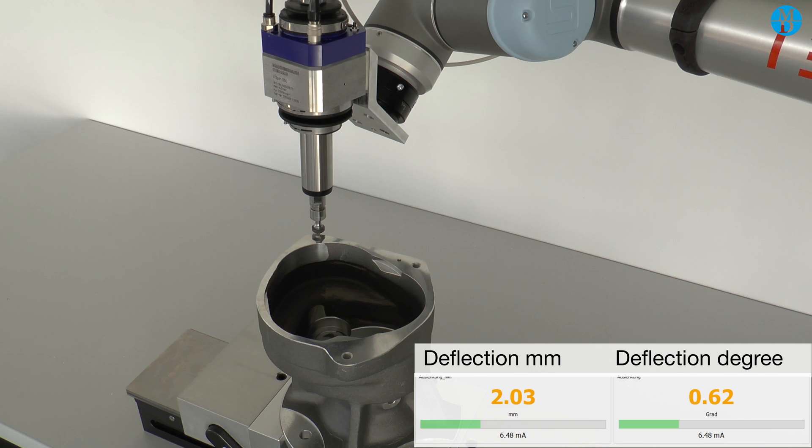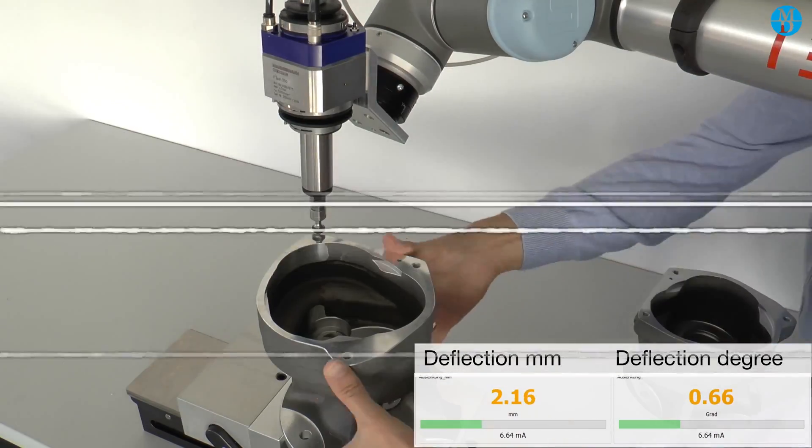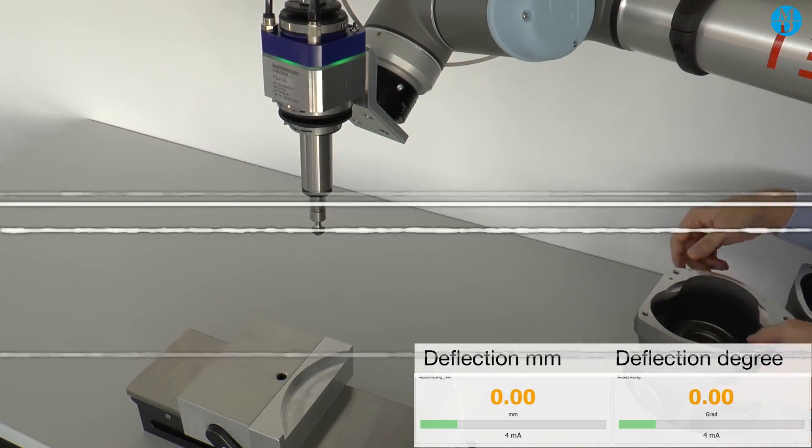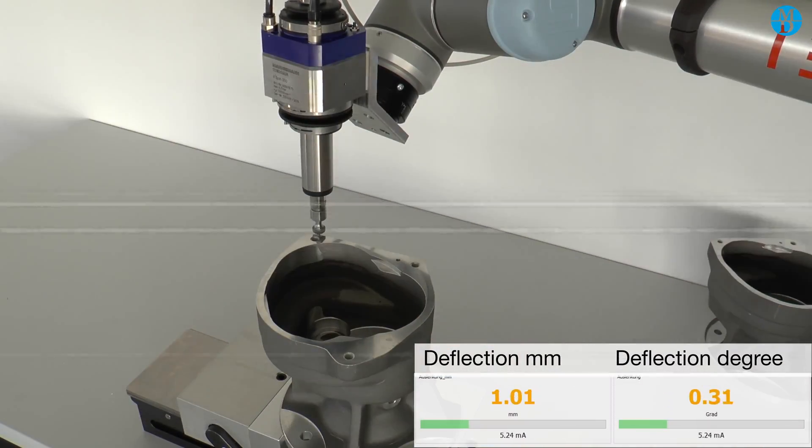You can use any wear point for this. You may have found it useful on a particularly complicated part to place the spindle on a specific point of importance and use the deflection from that way. So now looking at the deflection, you can see that the part is not correctly installed. We were at 0.6 degrees.